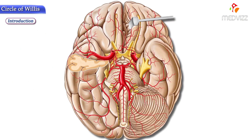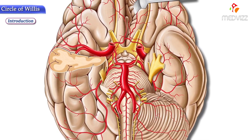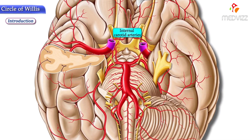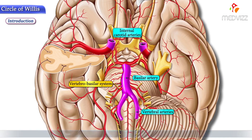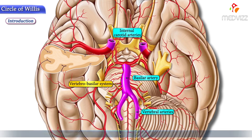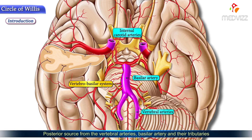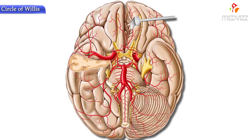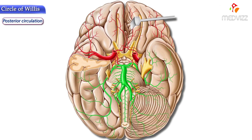The Circle of Willis, or circulus arteriosus, is formed by two interconnecting arterial sources: the internal carotid arteries and the vertebral basilar system, which is formed by two vertebral arteries and the basilar artery. This anastomosis is in an anterior-posterior order, with the anterior source from the internal carotid arteries and their branches, and the posterior source from the vertebral and basilar arteries and their tributaries.